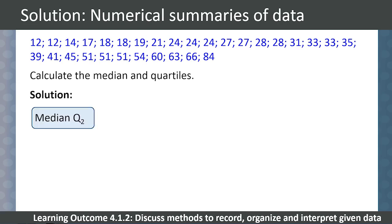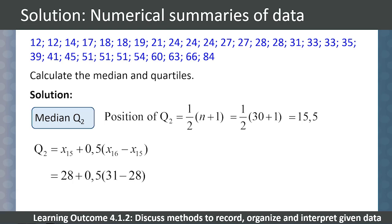For our median Q2. The position of Q2 is given by 1/2 times (n+1). n is 30, so the position of Q2 is 15.5. So our value for the median is calculated as the 15th value plus half of the 16th value less the 15th value, which gives us 28 plus 0.5 times (31 minus 28). So the median is 29.5.